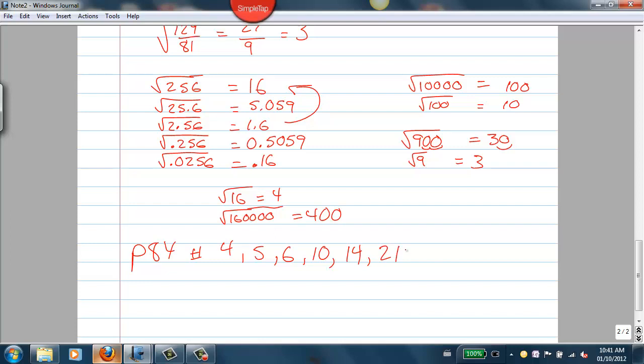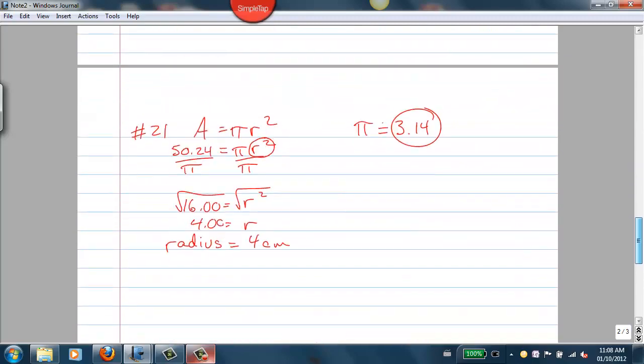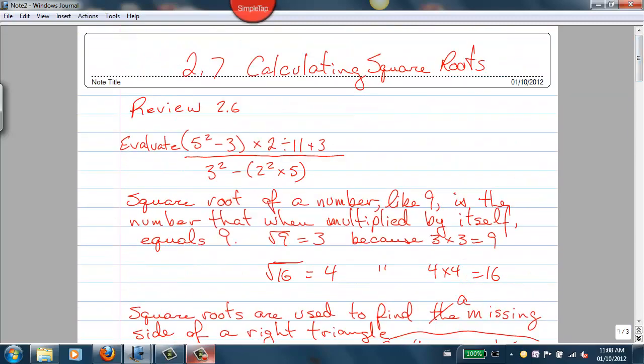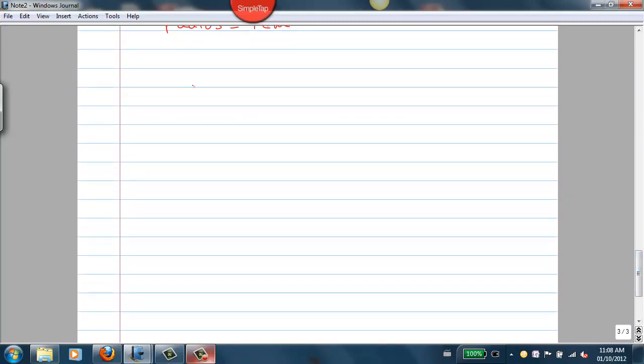So your homework assignment for this on page 84: 4, 5, 6, 10, 14, 21. And then I think I've got one other question coming up here. Oh yeah, number 21. Sorry about that speed, back and forth. Oh, I did something on 21 with the circle. You may want to back it up and pause it.